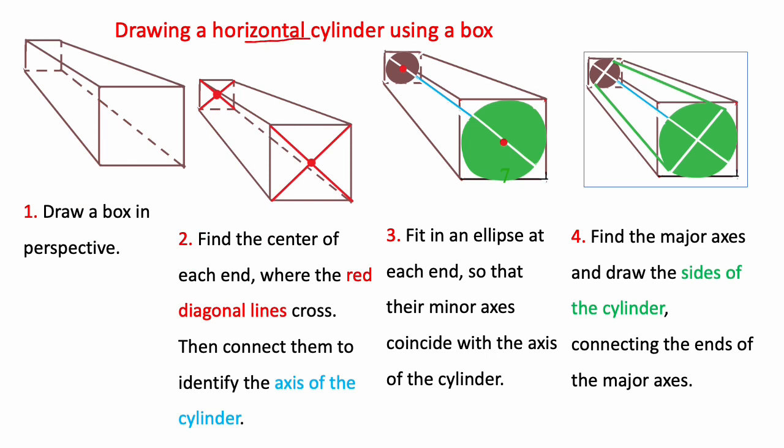Let's now draw a horizontal cylinder using the box method. First draw a box in perspective, then find the center of each end where the red diagonals cross. Connect these two ends with this blue line which becomes the axis of the cylinder and then put in the ellipses and this is the hard part. But concentrate on having the minor axis of the ellipse contiguous with the axis of the cylinder and you can see that it sort of slants.